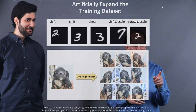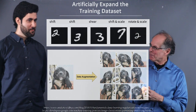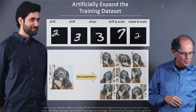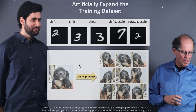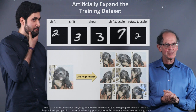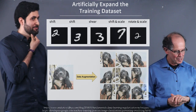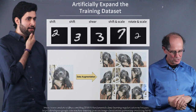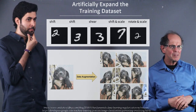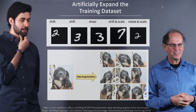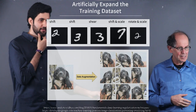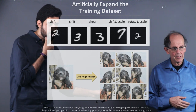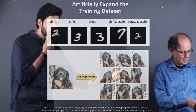Here we have a picture of a dog, and you can see that there are different distortions — dog distortions. You can see on the right. Can you point out one of them? For example, where is shift and scale? These are combinations of different transformations — some are scale, some are shift, some are rotate.